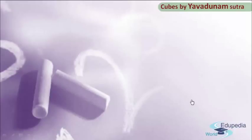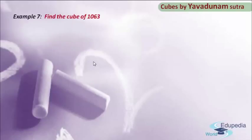Let us see what that example is. The example that I am going to take in this session is: find the cube of 1063. In order to find the cube of 1063, we have some parts of the process that we have to follow. The first part of the process is the left part.